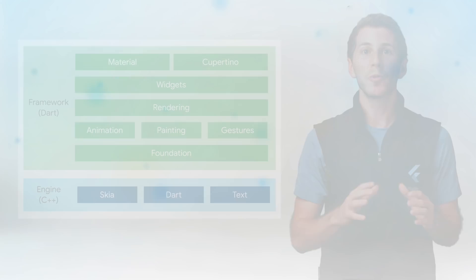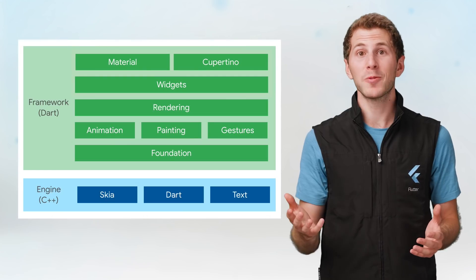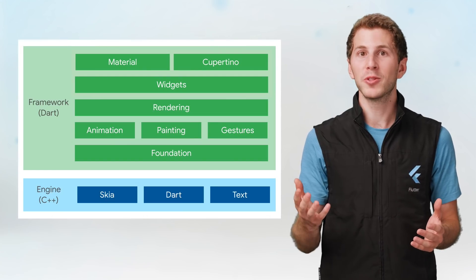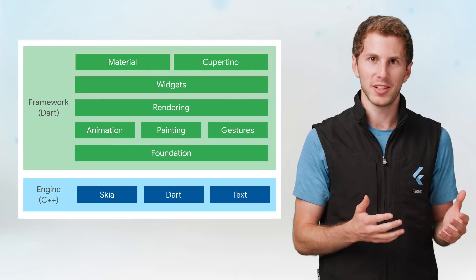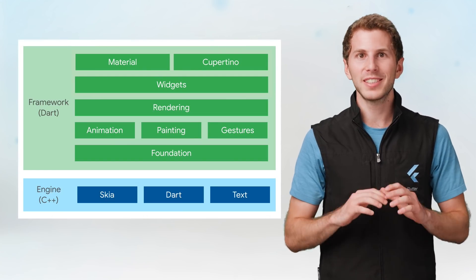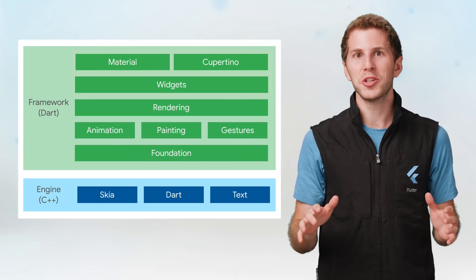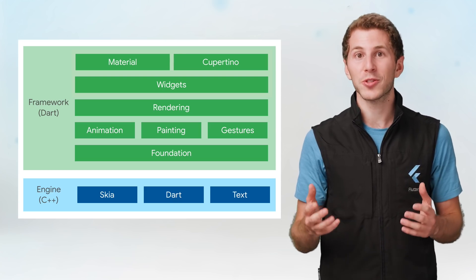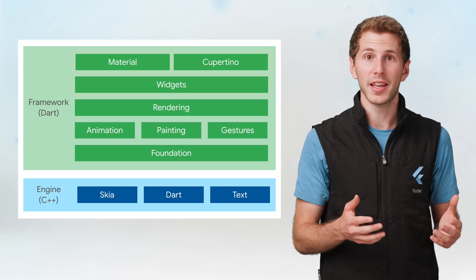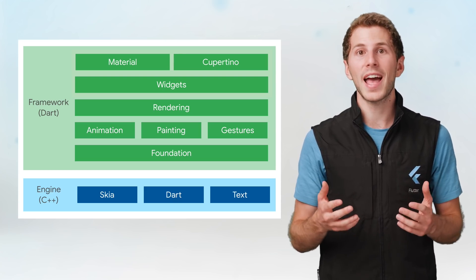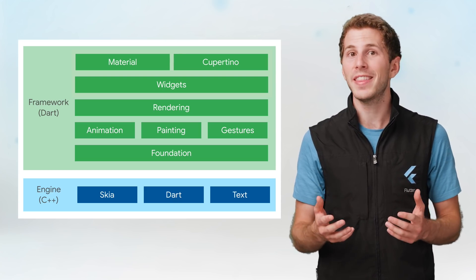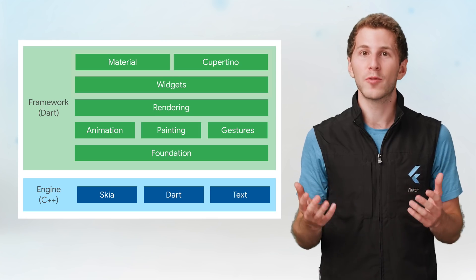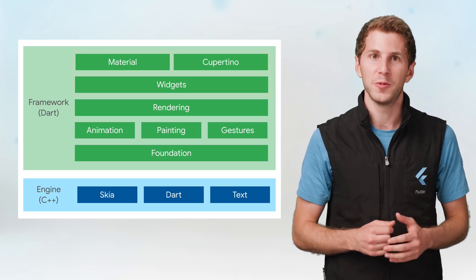Internally, Flutter consists of a framework built with Dart and a rendering engine built mostly in C++. Because everything in the top region is Dart, you get a complete stack trace for better debugging, and you can access and change anything in all levels of the framework if you want to.